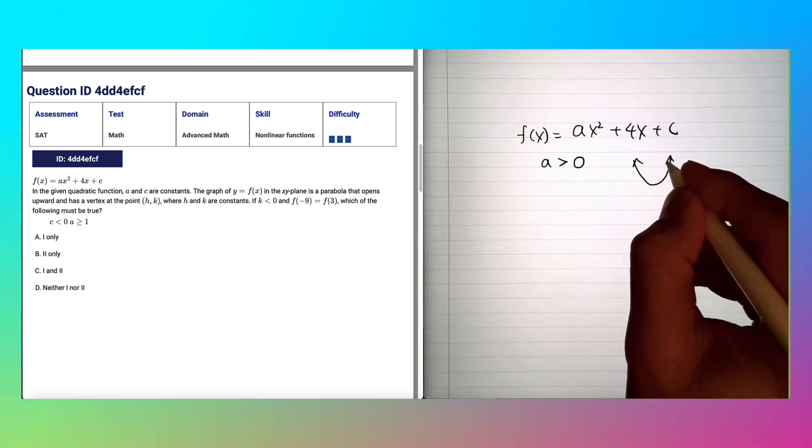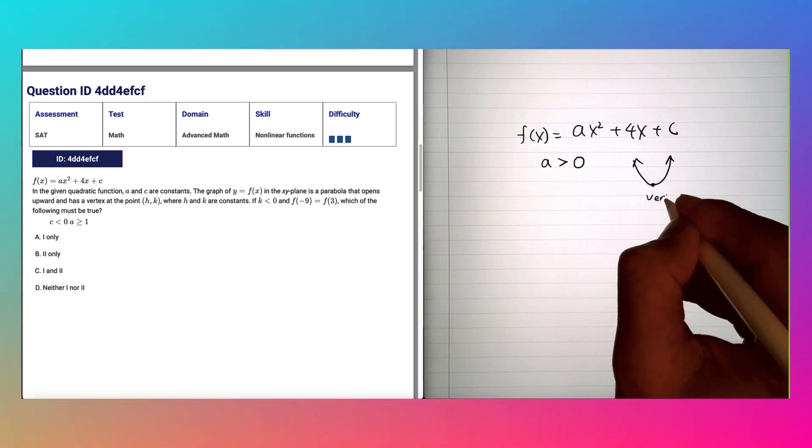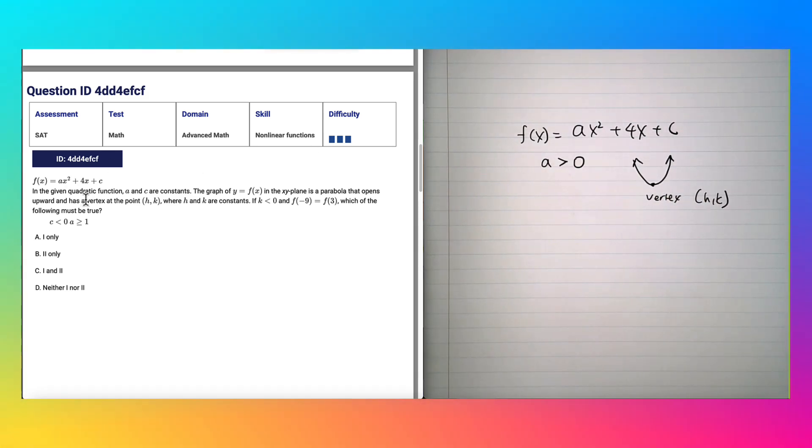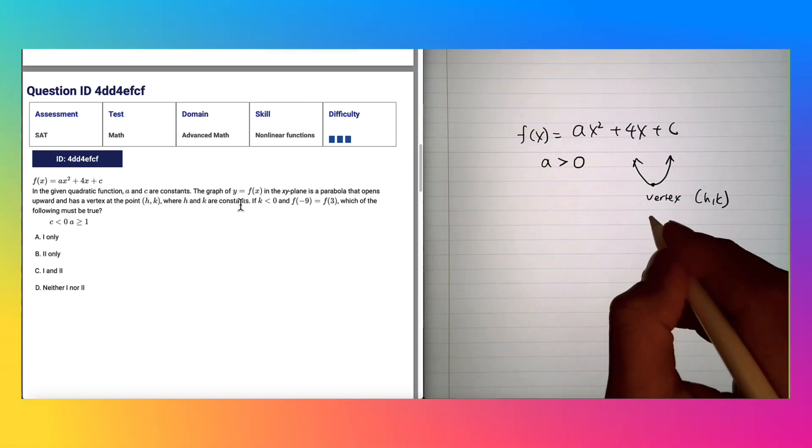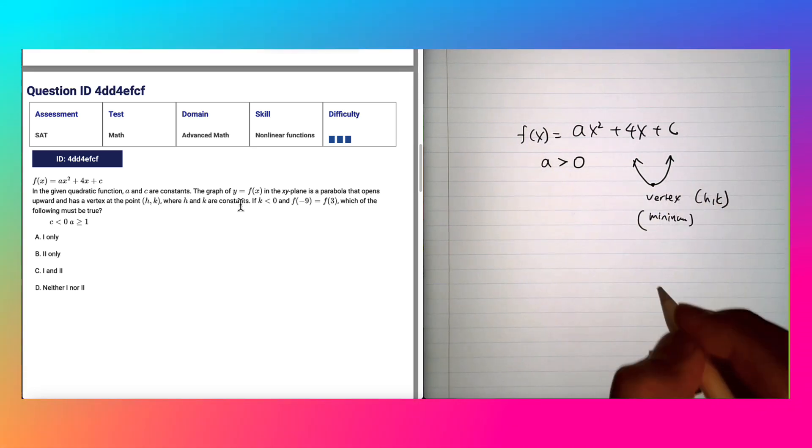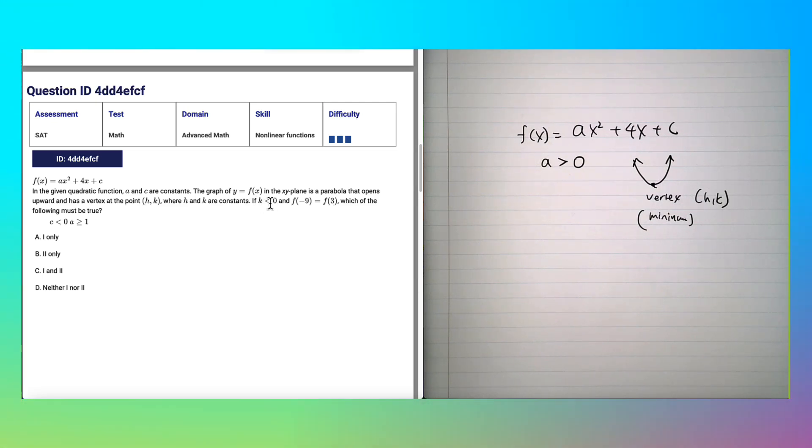And you will have a vertex, and this vertex is (h, k) according to the question. It has a vertex at the point where h and k are constants, and specifically I'm going to say this is a minimum. If it's facing upward, you have a minimum point at the bottom.